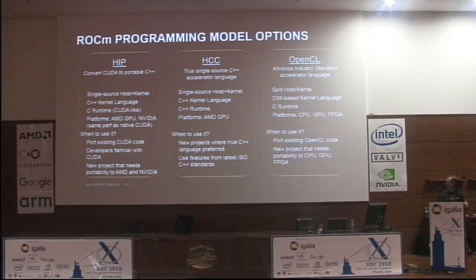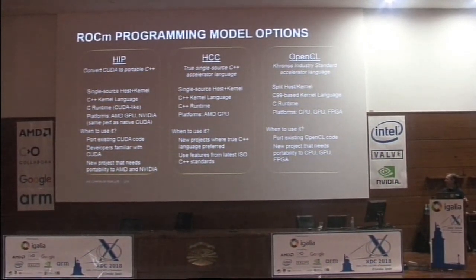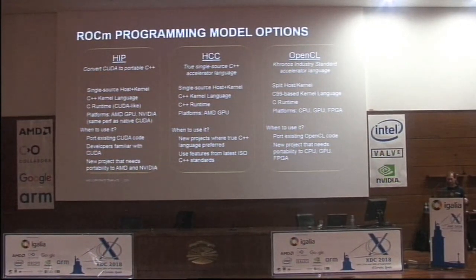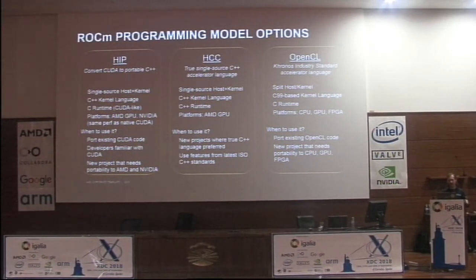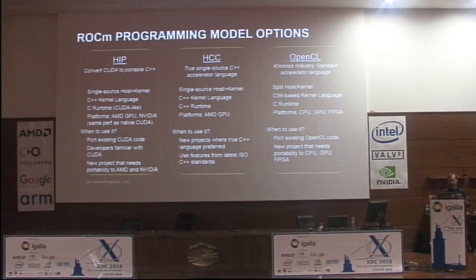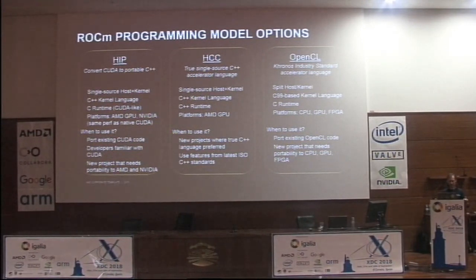Here we have an overview of the different programming models that we support with ROCm. On the right you have OpenCL, the well-known compute programming model that everybody uses on Linux right now. But we're also enabling single-source programming similar to CUDA, and we actually have a portability layer that should make it 99% automatic to port CUDA code to our architecture. It's a C++ kernel language and C runtime language — compile-time compatible between AMD and NVIDIA, though not runtime compatible. It's really useful for porting existing CUDA code, for developers already familiar with CUDA, and also useful if you're starting a project that's supposed to run on both architectures. HIP is based on HCC but you can use HCC without HIP as well.